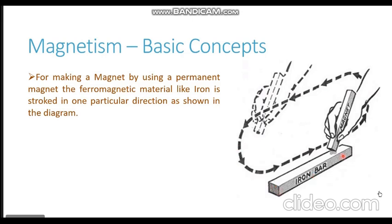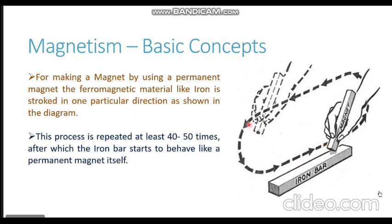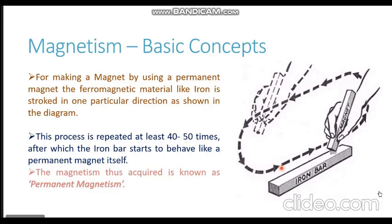As you can see in this diagram, we have an iron bar — this is a non-magnet, a simple iron bar we want to convert into a magnet. We get hold of a permanent magnet, represented by the rod held in the hand, and move that permanent magnet in a particular direction repeatedly — as shown by the dotted line with arrows. Once you repeat this process at least 40 to 50 times, the iron bar starts to behave like a permanent magnet and shows magnetic properties.